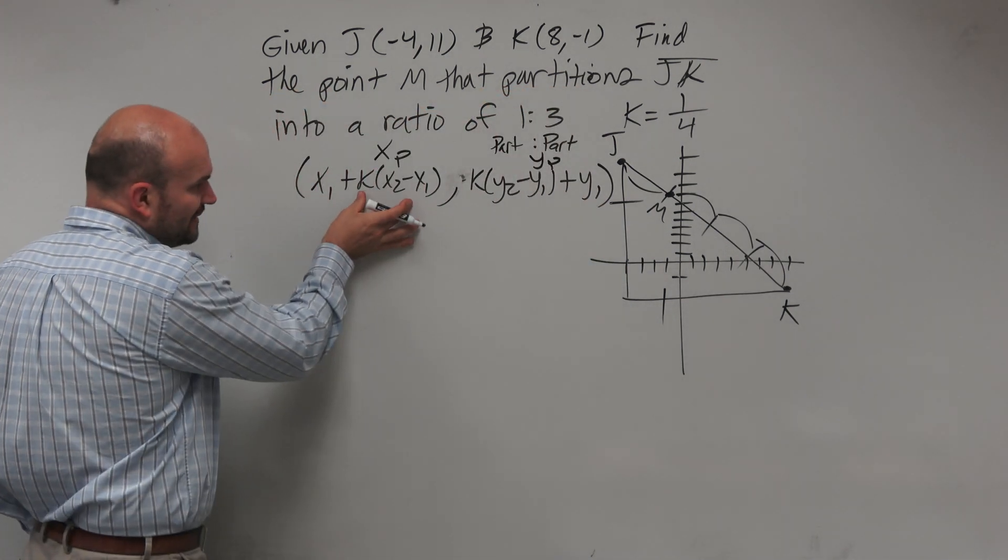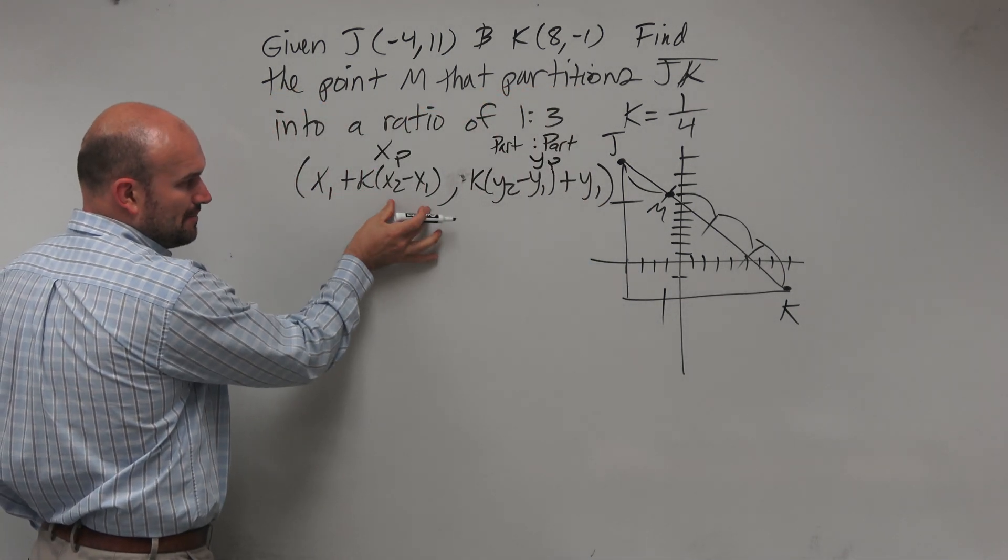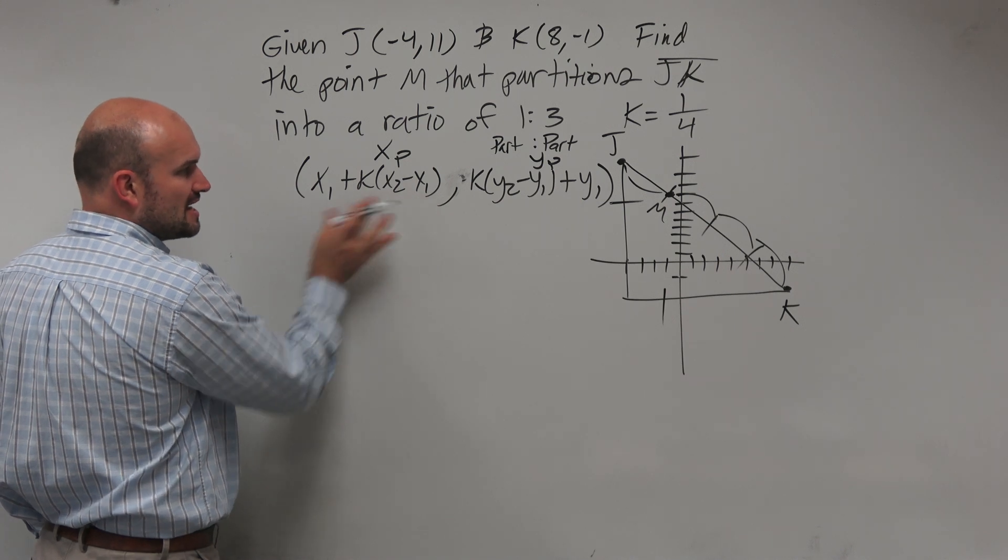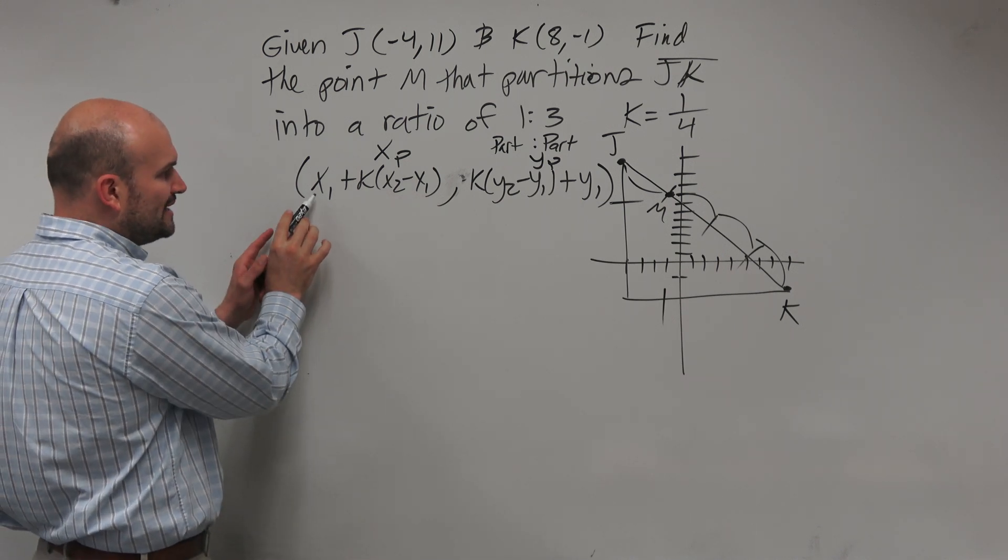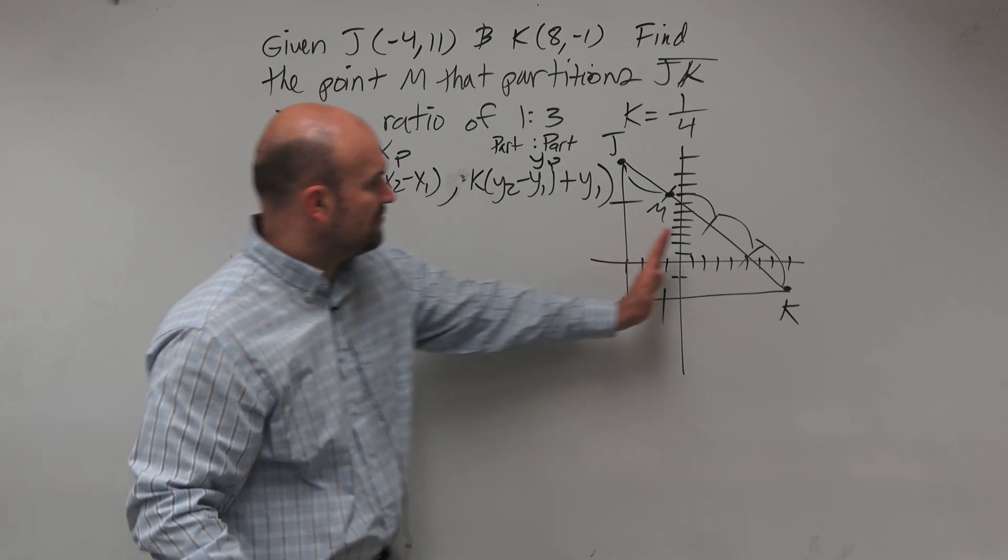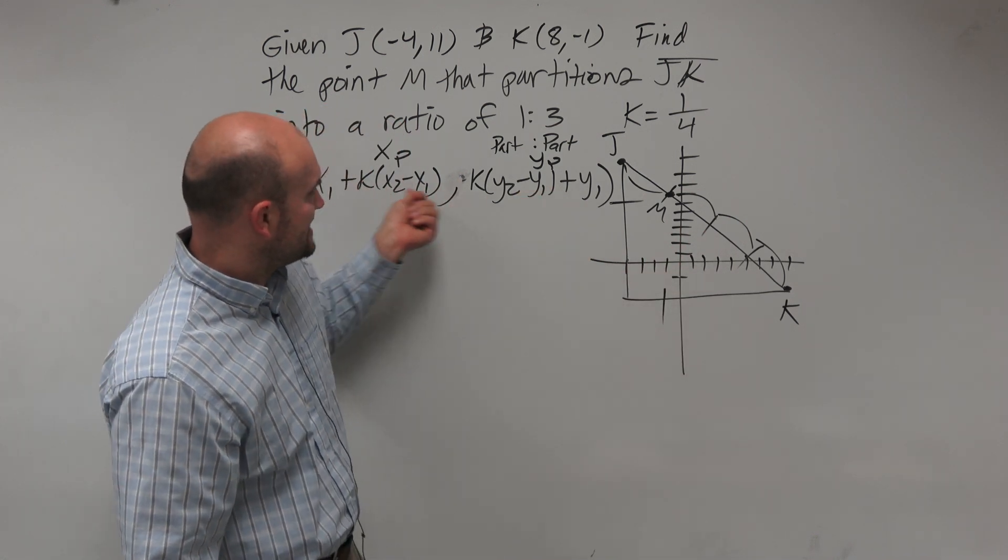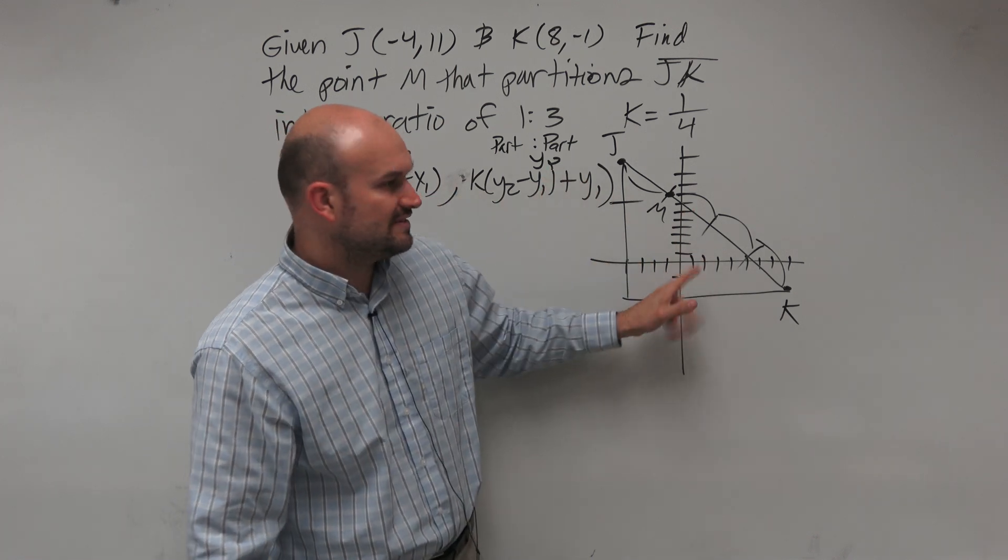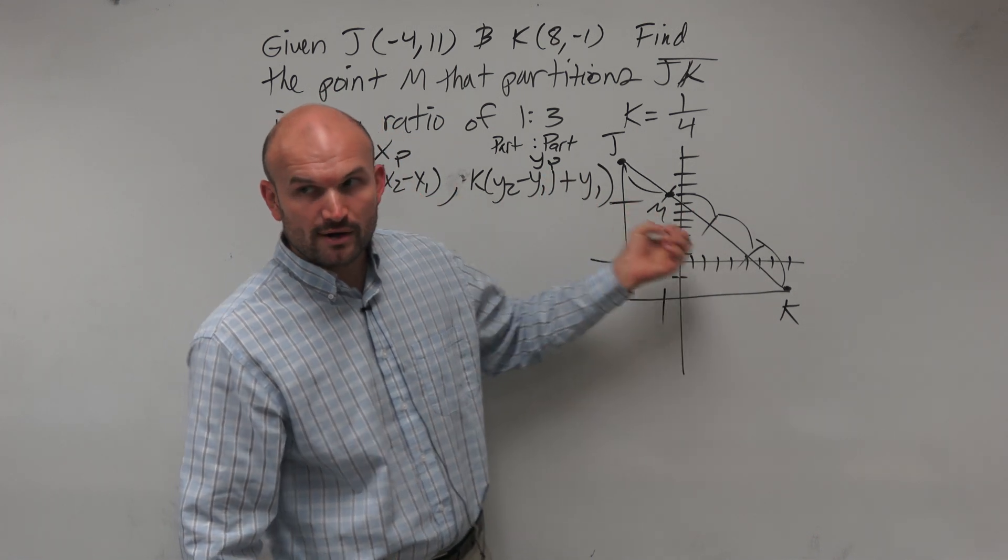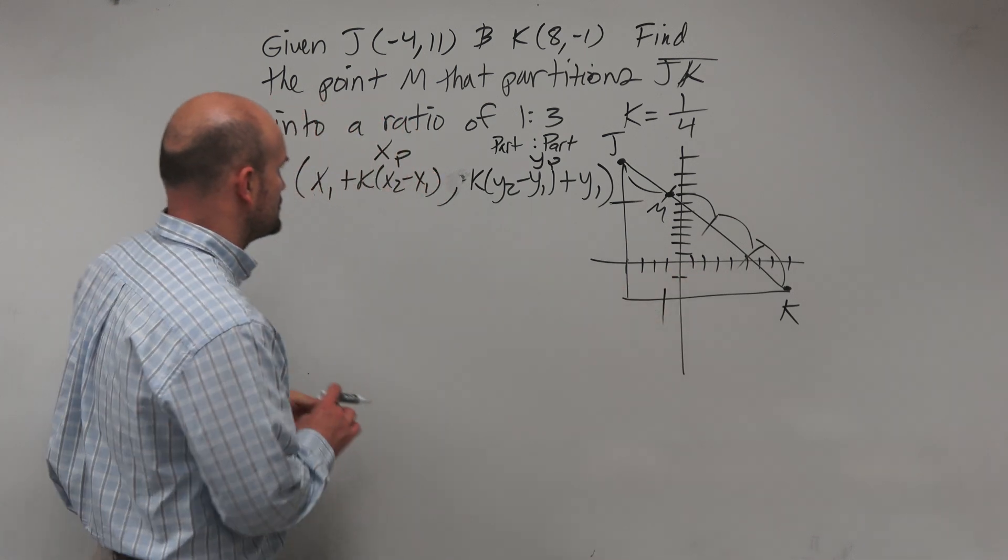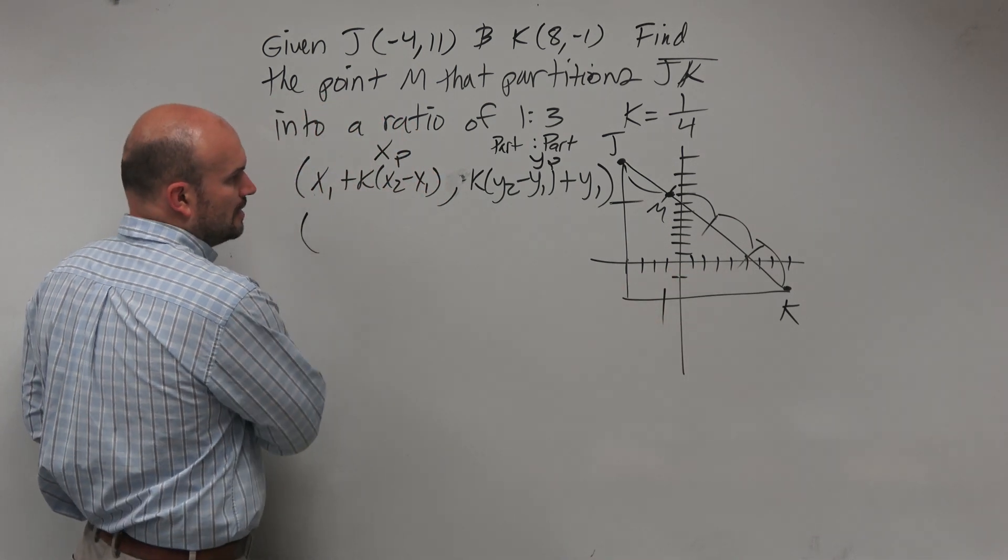So what we're really doing here is we're taking the ratio and we're multiplying it by the horizontal distance. And then we're including this x1, which is telling you how far this is away horizontally from the origin. Because if you just multiply k times your distance, that's going to give it to you from the origin. So we need to include where we're moving from, from the original x-coordinate.